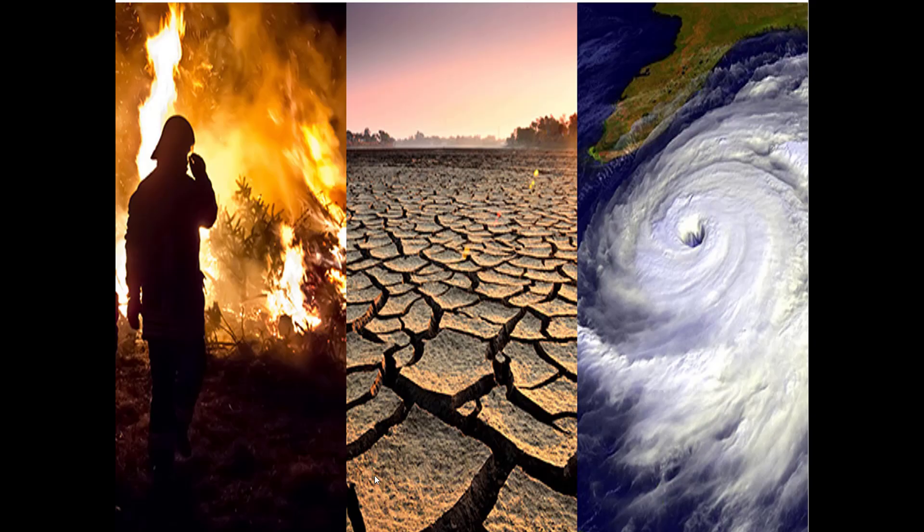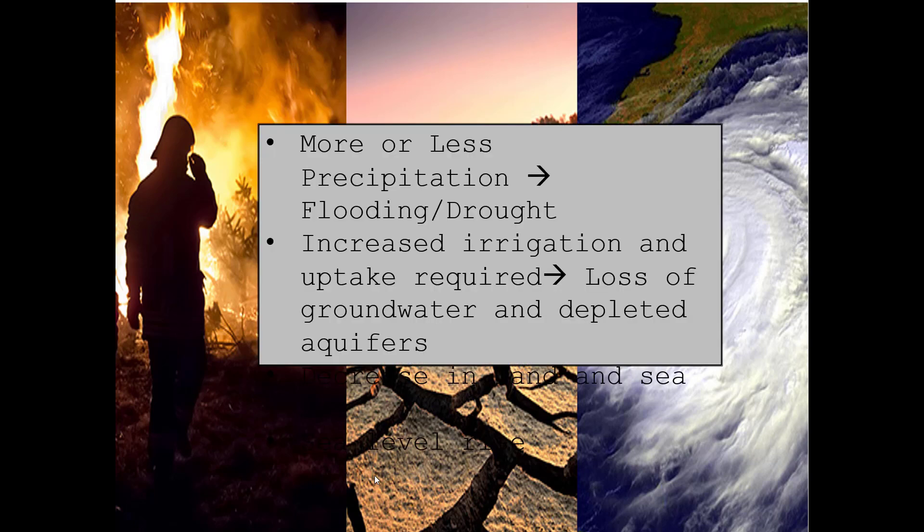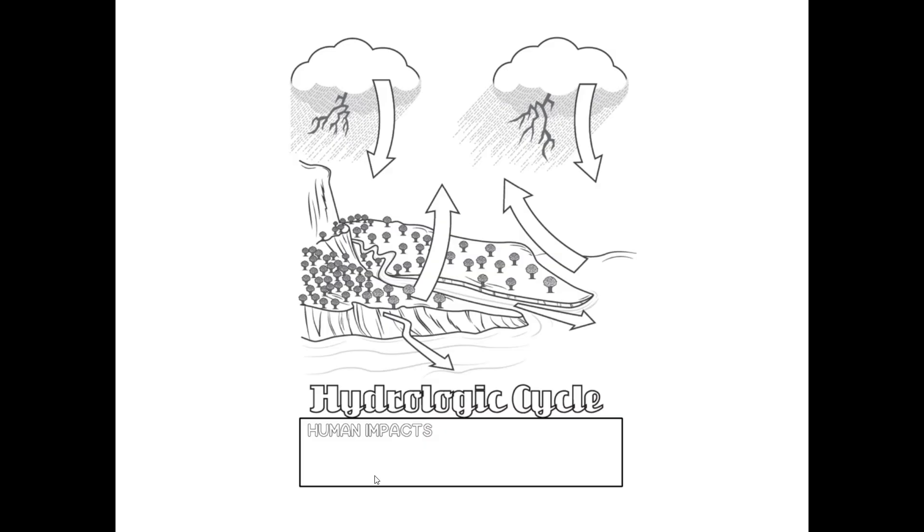Climate change affects the water cycle through more or less precipitation, leading to either flooding or drought — we'll discuss the specifics later. Increased irrigation and uptake will be required, and in some places increased evaporation will cause loss of groundwater and depleted aquifers. This isn't something being tested right now, but just be aware that climate change basically affects everything and impacts our ability to access fresh water.